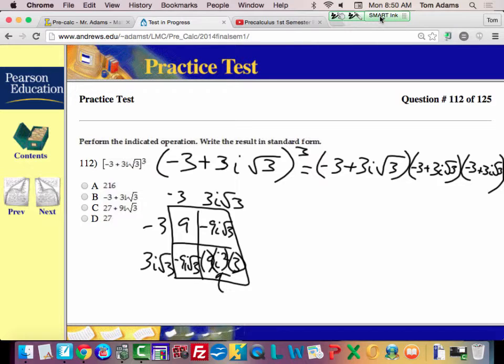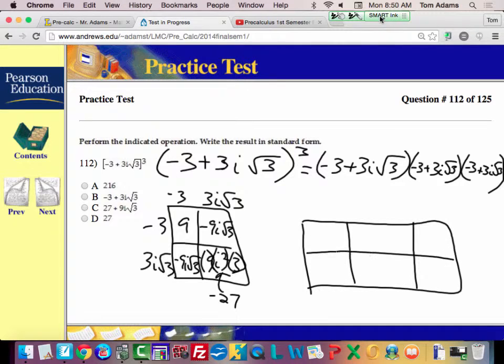So 9 times i squared is negative 9, times 3 is negative 27. So all this is negative 27. Now if I combine like terms, my first term will be 9. This is going to be negative 18i square root of 3 and then minus 27.